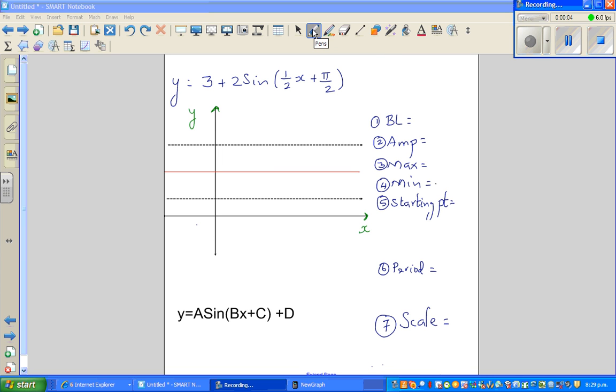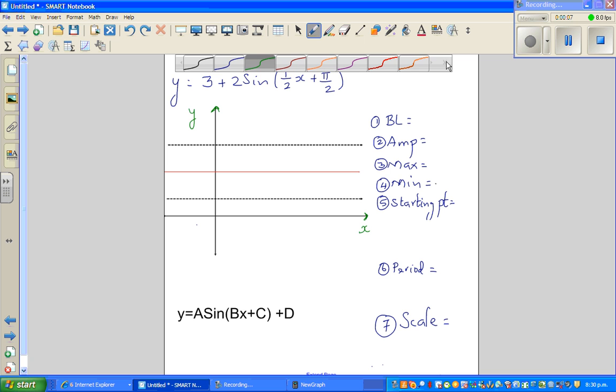Hello, in this video let's see how to graph this equation which has all the features of transformation of a sine graph. This is the general formula of a sine or cosine graph: y equals A sine of Bx plus C plus D. The baseline is D, A is the amplitude, from B you can decide the period, and from C you can decide the starting point. These are the four features which help you draw the sine graph.